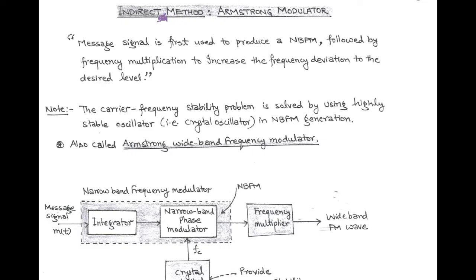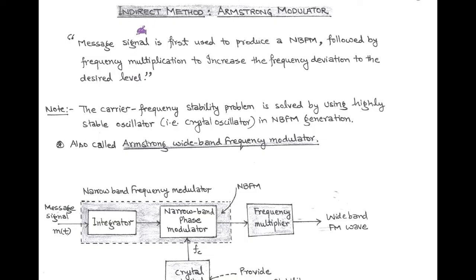The next method for generation of FM is the indirect method. It is also called the Armstrong modulator. In the indirect method, the message signal is first used to produce narrow band FM, and then a frequency multiplier is used to increase the frequency deviation as per our interest. There is a difference between the direct and indirect methods: in the direct method, narrow band FM is generated directly using the instantaneous frequency, that is, the frequency of oscillation.